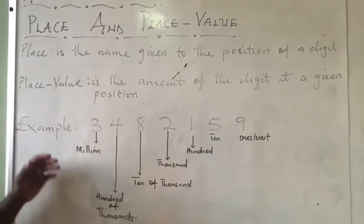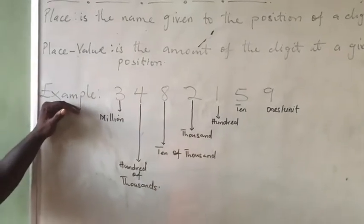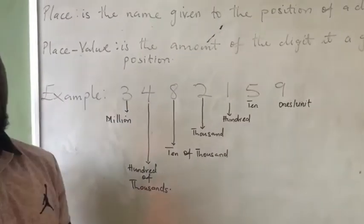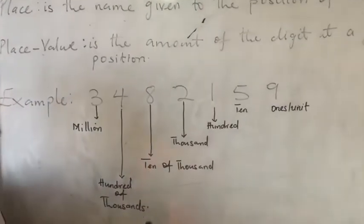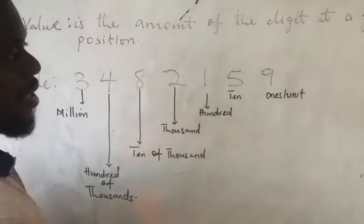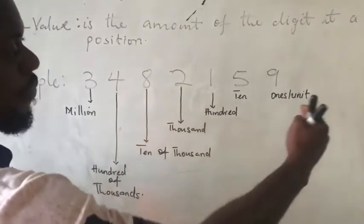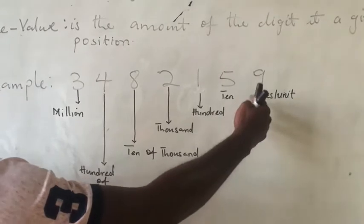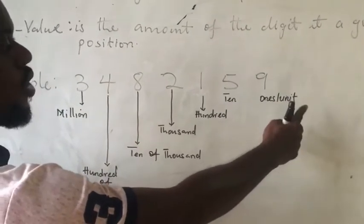So if you look at the example that I have over here, I have about 7 digits over here. And each 7 digits has a name depending on the position that that digit lies. So if you start from your right, which is the 9, it is at a place known as the ones or units.